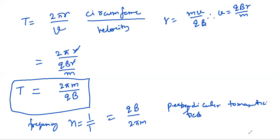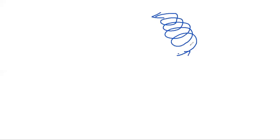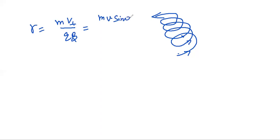Now, if the particle is entering with an angle theta, then what will happen? When the particle enters making an angle theta, its path will not be circular — it will be in the form of a helix. The radius of this helical path is R = MV sinθ/QB, where V sinθ is the perpendicular component of velocity.